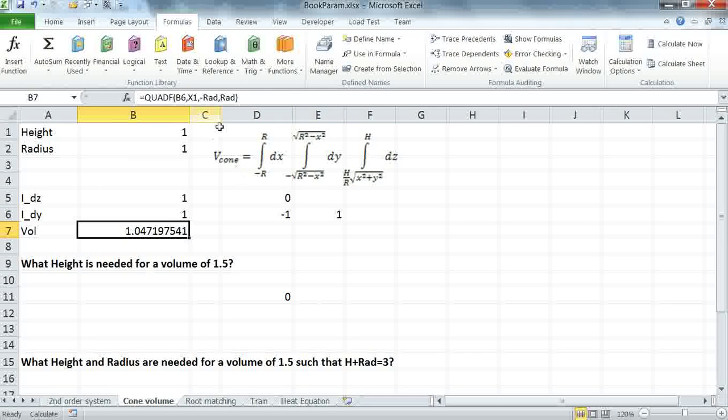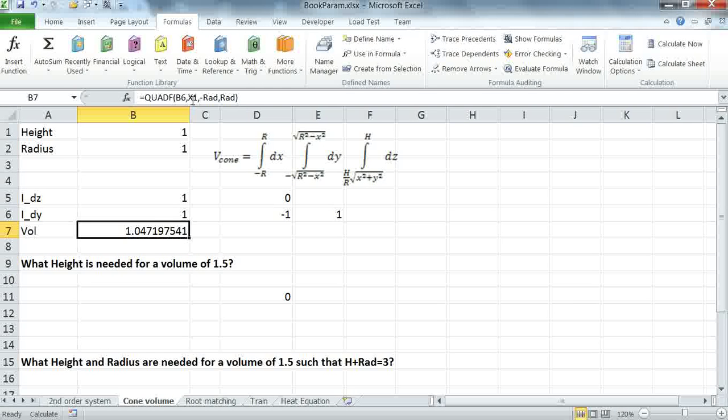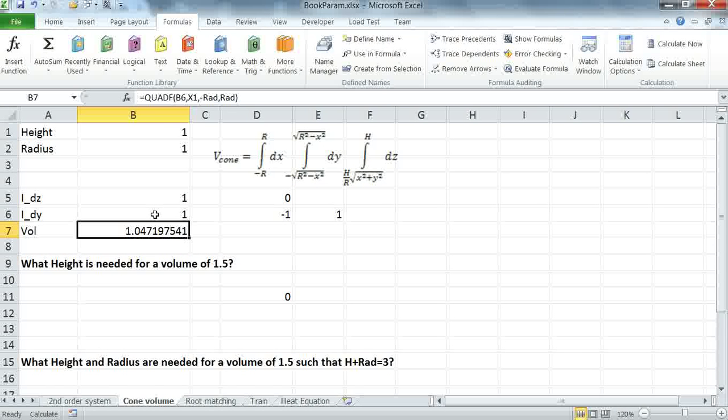Finally, my outermost integral is with respect to X1. And it takes as integrand B6, the middle integral. And the limits are from minus R to R.